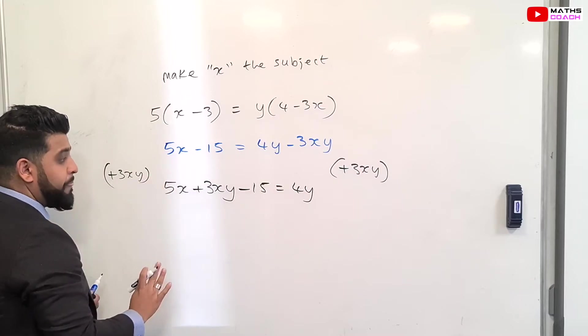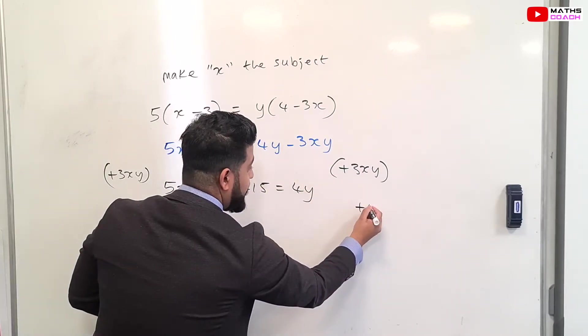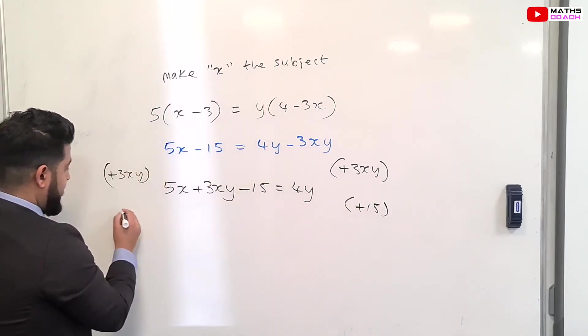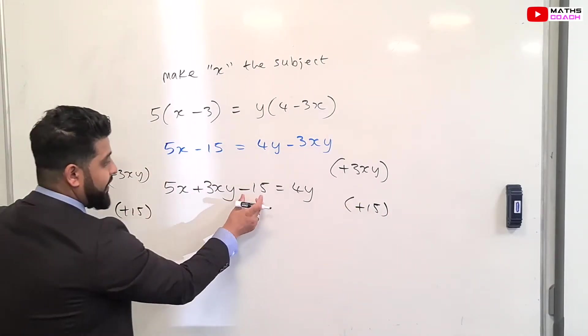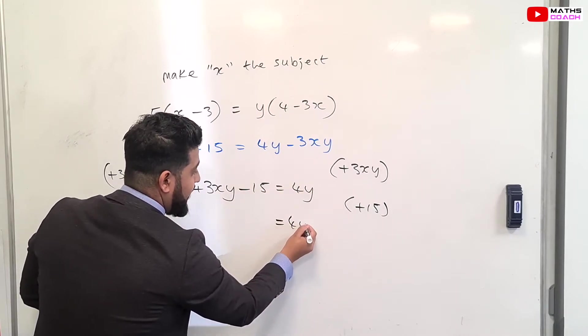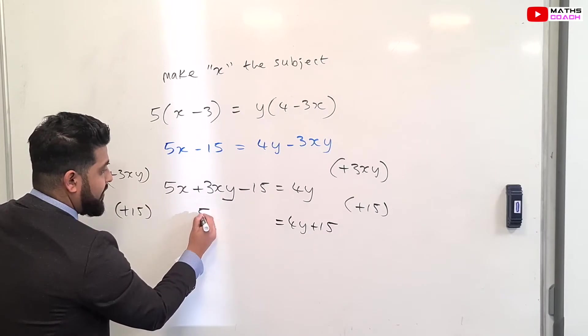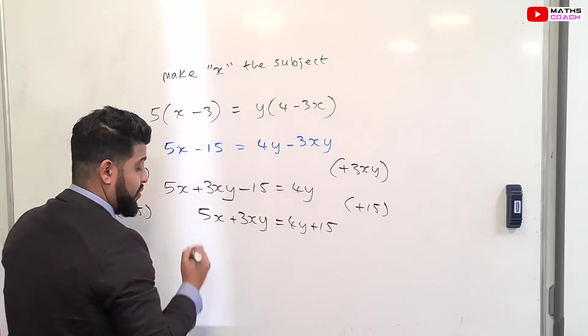So over here I will have 5X plus 3XY minus 15 is equal to 4Y. The minus 15 is still there from before. But I need to get rid of that too. So I will add 15 to both sides. Adding 15 will get rid of that, become a 0, and this will gain the 15. So I have 4Y plus 15, and this side I will have 5X plus 3XY.